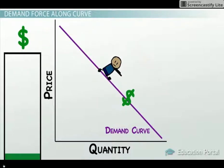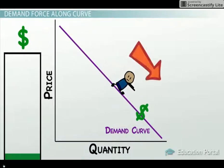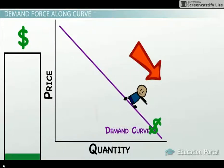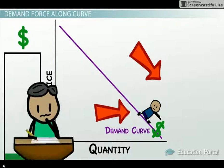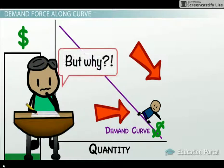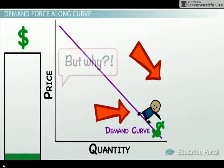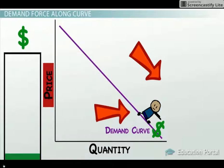Since the demand curve slopes downward and to the right, as the price falls, a greater number of people would demand the product. What causes this movement? Ultimately, a price change. Price is one of the strongest market forces in all of economics.